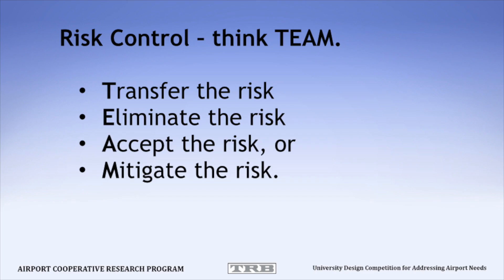When you identify a risk that you must control, there are four things you can do — think TEAM. You can transfer the risk, you can eliminate the risk, you can accept the risk, or you can mitigate the risk. For example, air traffic controllers are responsible for maintaining separation between aircraft. It is very common in good weather for a controller to ask the pilot of plane number two if they see plane number one. When the pilot responds in the affirmative, the controller will often say, 'Maintain visual separation with plane number one, you are cleared to land.' The controller has now transferred the risk of losing required separation from the controllers to the pilots.